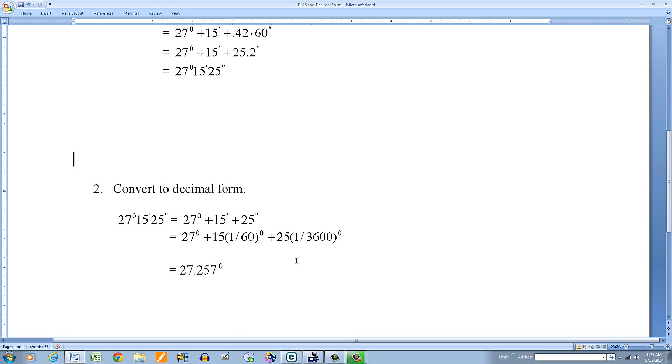And now you just combine this. So you can multiply this out. Or if you wanted to, you can multiply the 27, get your common denominator of 3600. So multiply this 27° by 3600. Multiply this right here, top and bottom, by 60. Combine and divide. And if you round off, this comes out to 27.257°. So those are the steps you would use if you did it manually.